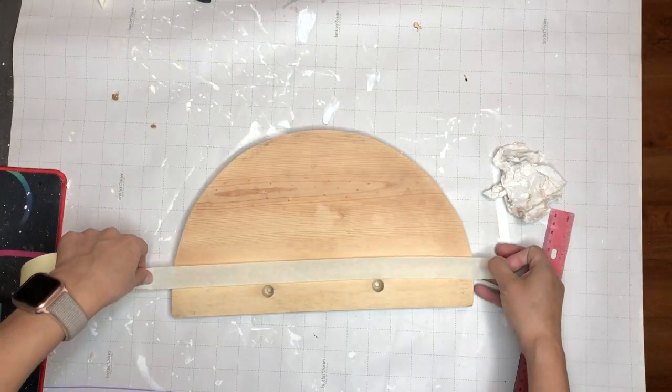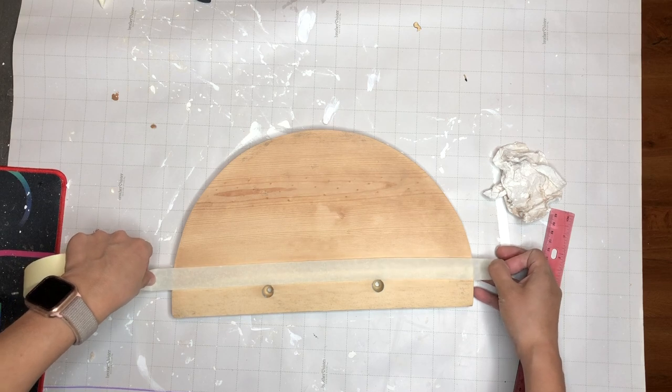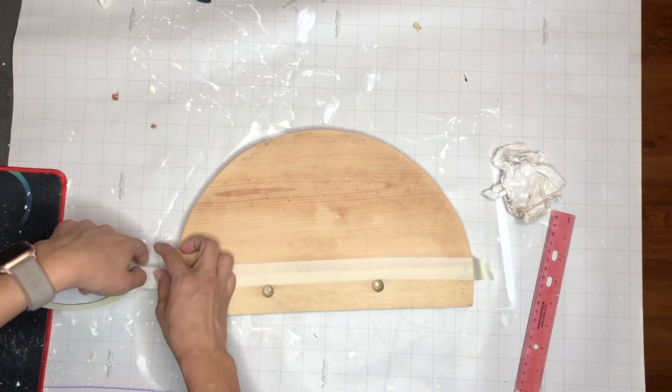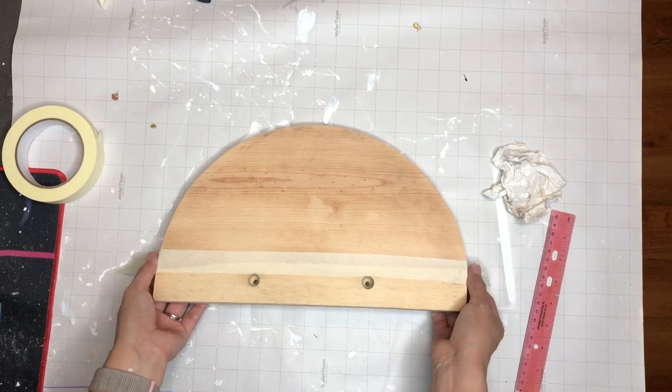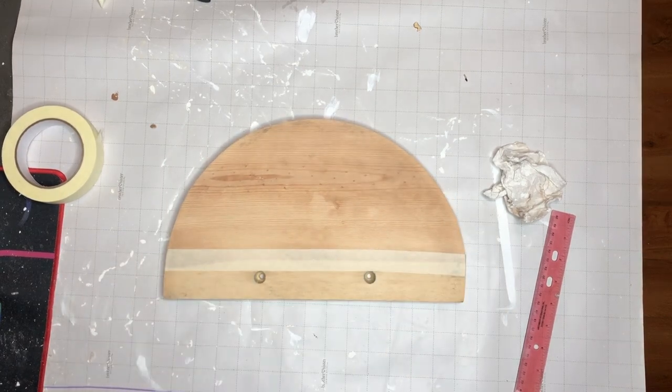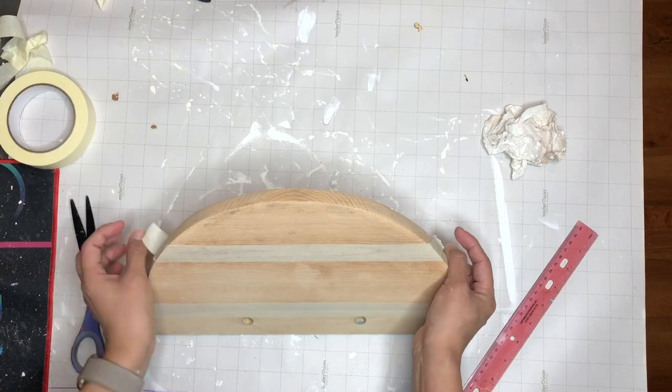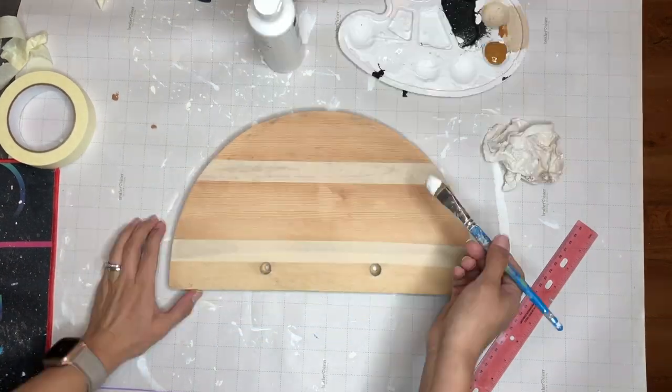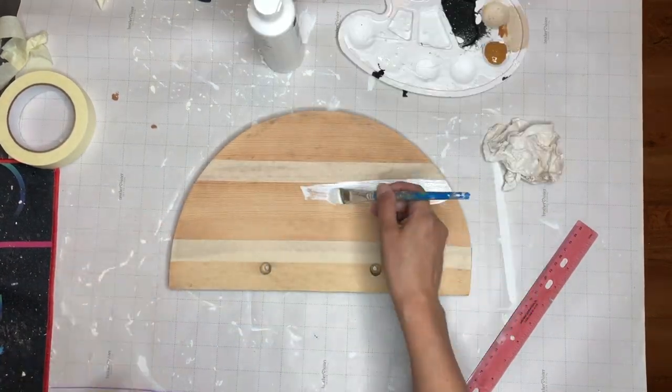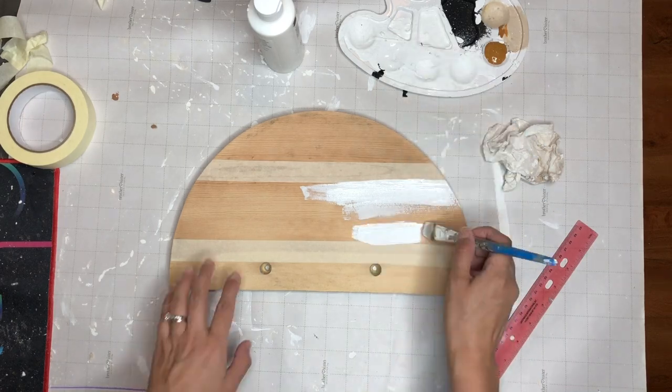So I took some masking tape and I am going to be marking exactly where I'm going to be painting. Because I want this to have a straight line. So I put the other tape above and that creates that bar in the middle or that space. And that is the space that I'm going to be painting white.